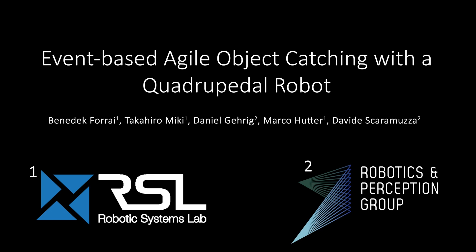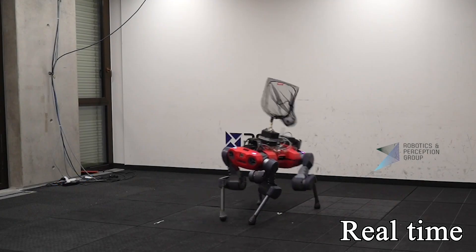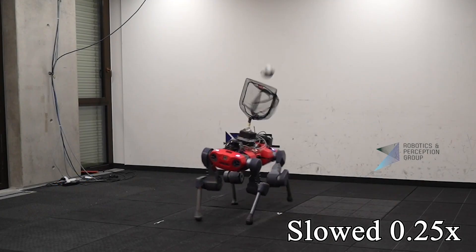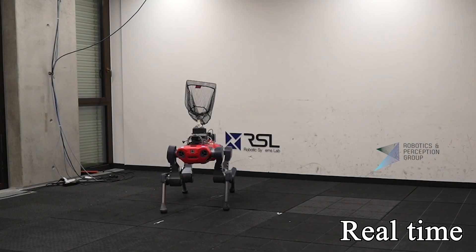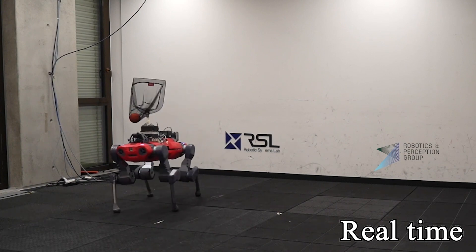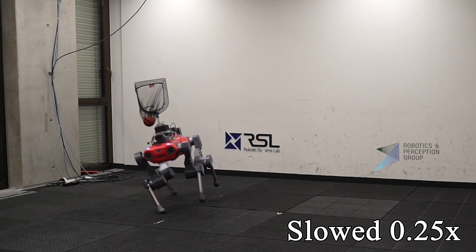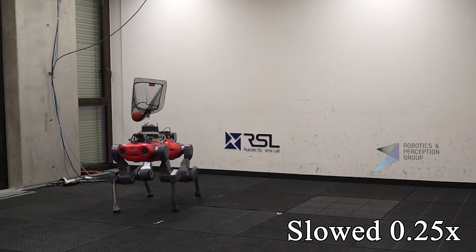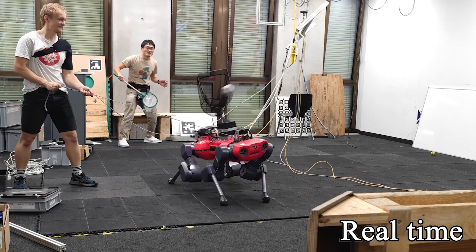In this video, we present event-based agile object catching with a quadruped robot. Building a fast vision pipeline on an event camera with only 10 milliseconds latency and training a locomotion policy in simulation with RL, we achieve an 83% success rate in catching high speed objects thrown at a speed of 15 meters per second.